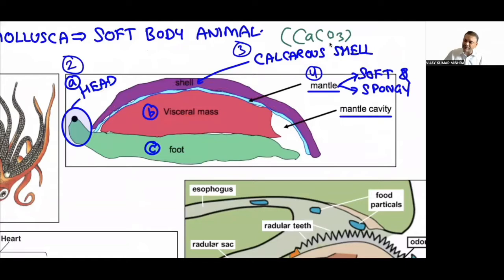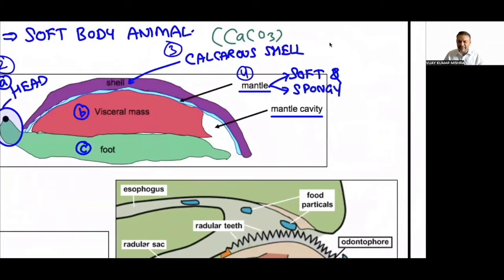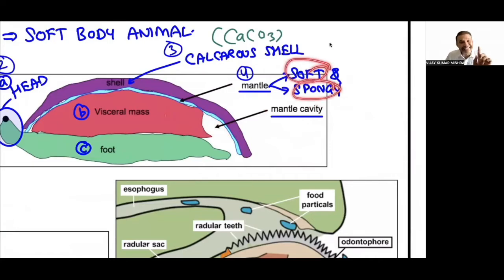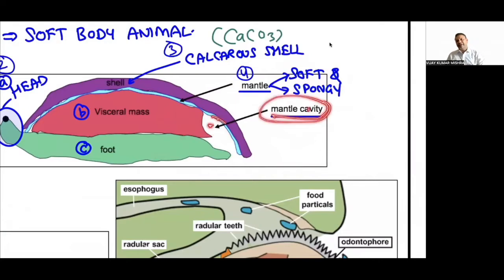In Mollusca, between the mantle and the visceral mass there is a space called the mantle cavity. This mantle cavity contains feather-like gills. These gills have a dual function: respiration AND excretion. This dual function of gills is a key NCRT point for phylum Mollusca.